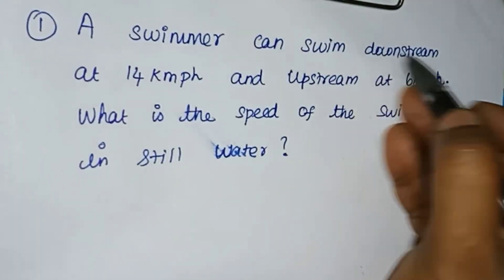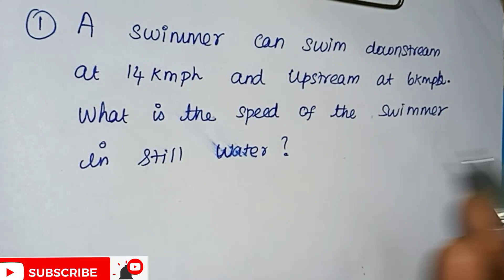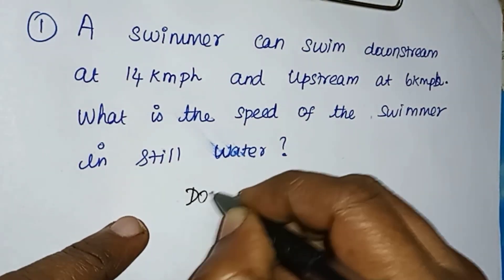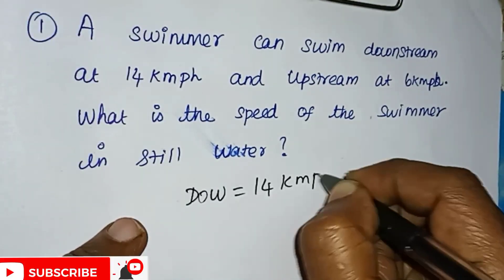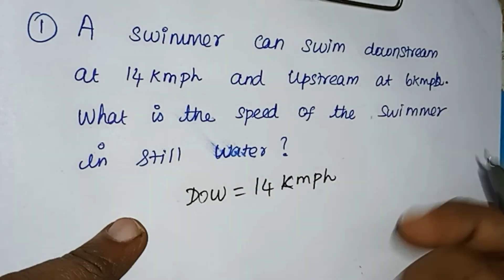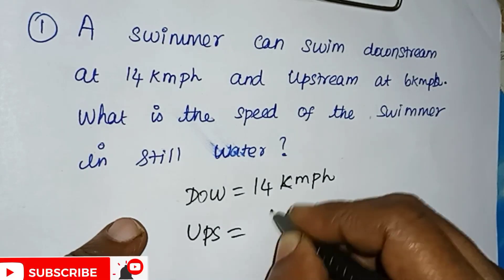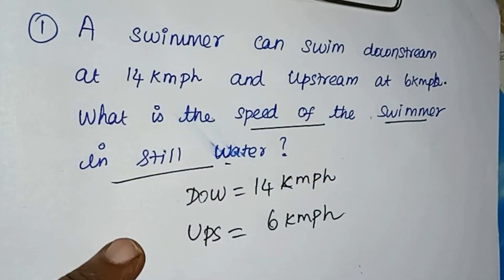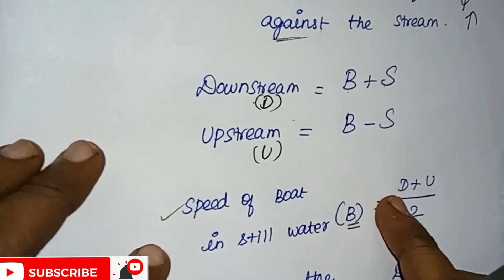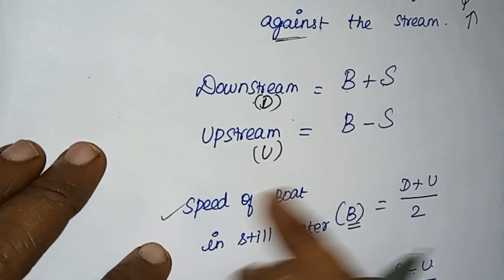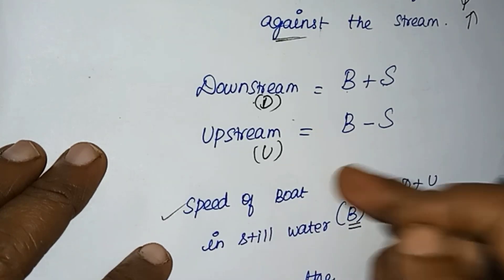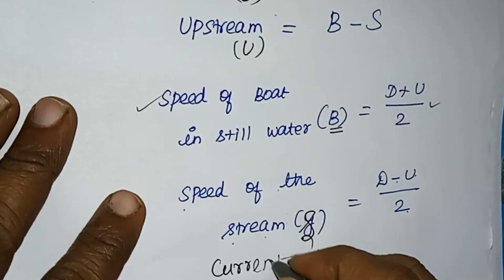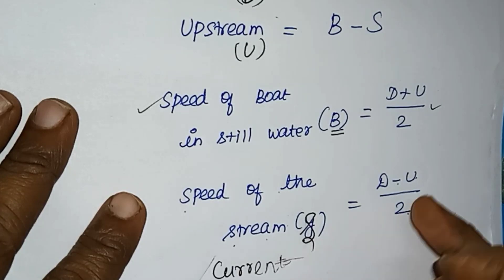A swimmer can swim downstream at 14 km per hour and upstream at 6 km per hour. What is the speed of the swimmer in still water? And what is the speed of the stream? The formula for the speed of the stream is D minus U divided by 2.